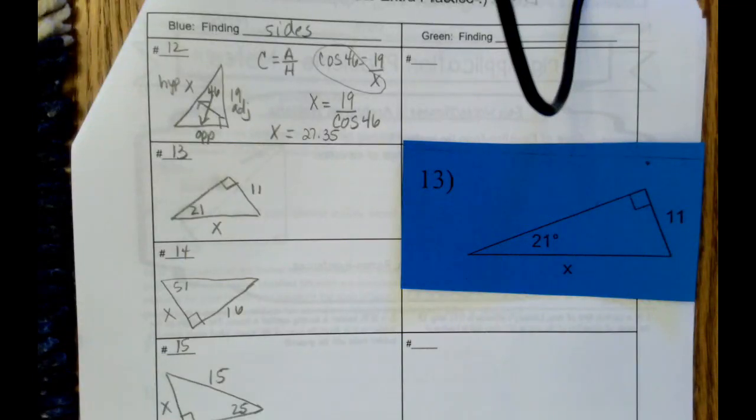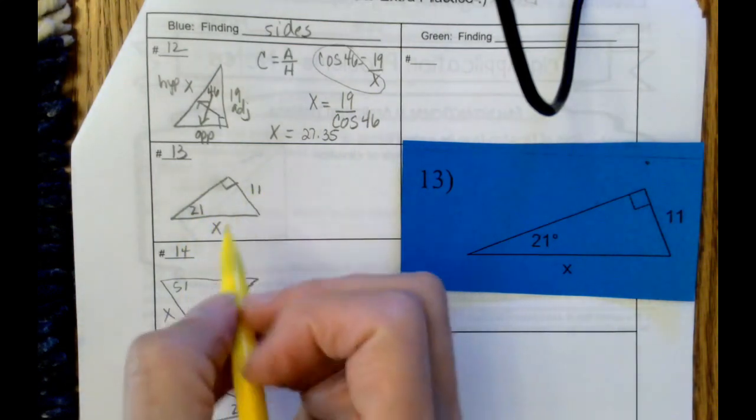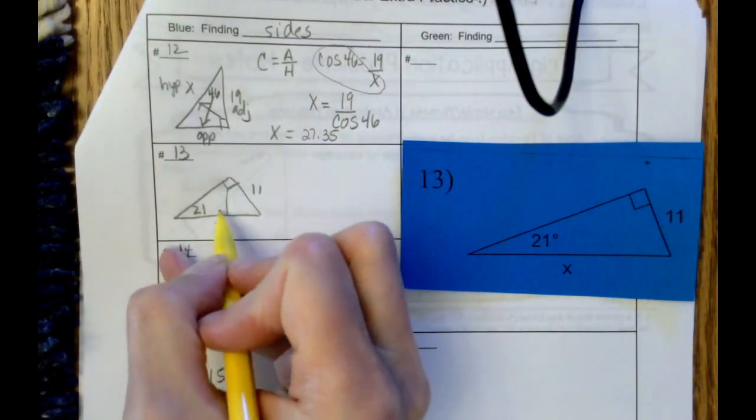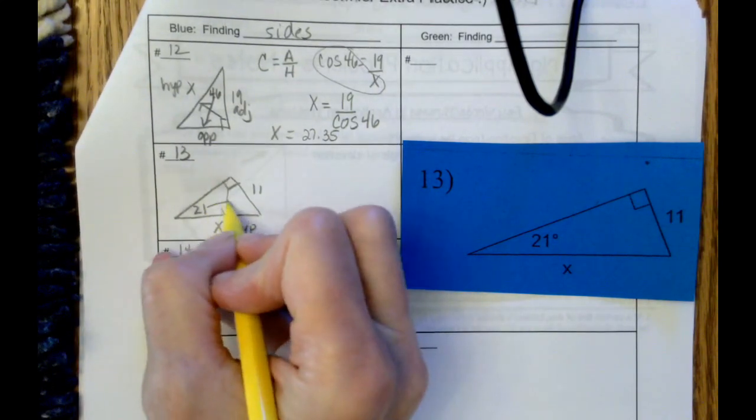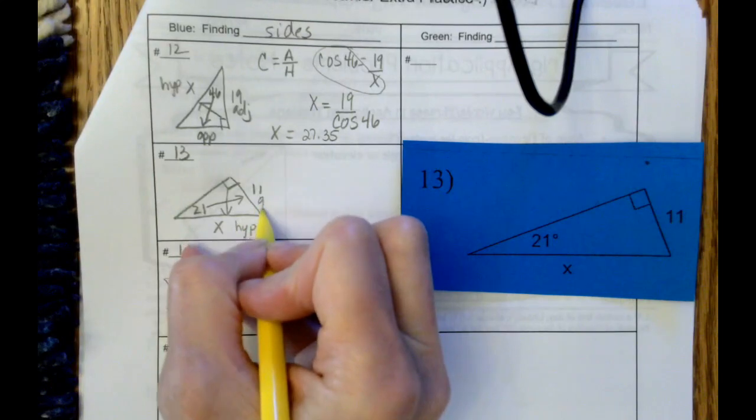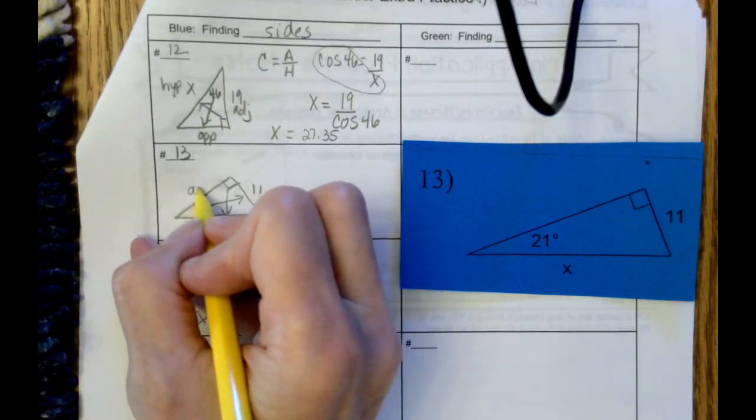Problem 13. We're looking at the blue cards, finding the values of missing sides. So I've drawn the triangle off the blue card over here in my box, and we're going to label. Across from the right angle is the hypotenuse. Across from the given angle is the opposite, which means our third side is the adjacent.